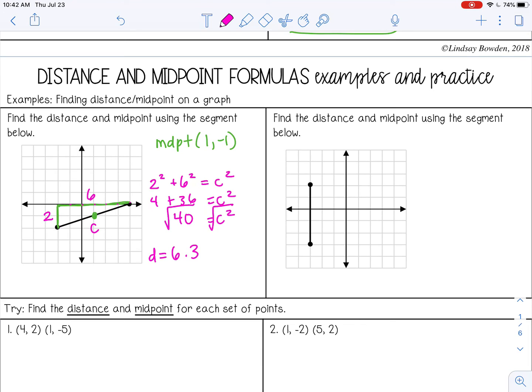And then in the next example, the midpoint is not directly on a point, but I can still tell it's right there. It's the middle of the two points. So that would be negative 3, negative half, or negative 0.5. And then the distance, I don't need to use any formula. I can just count: 1, 2, 3, 4, 5. So if the line segment is vertical or horizontal, just count the distance on the graph.